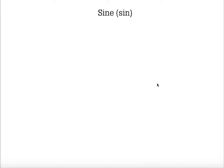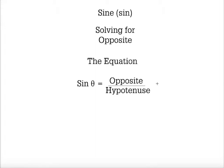All right, we're going to use sine today and solve for the opposite of a right angle triangle using trigonometry and the sine equation, which is sine theta equals opposite over hypotenuse.